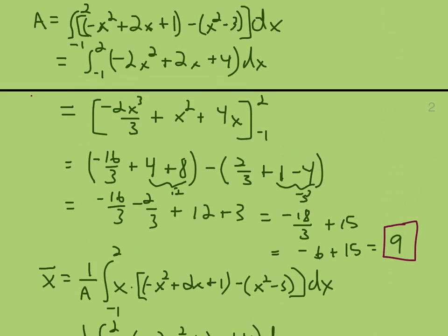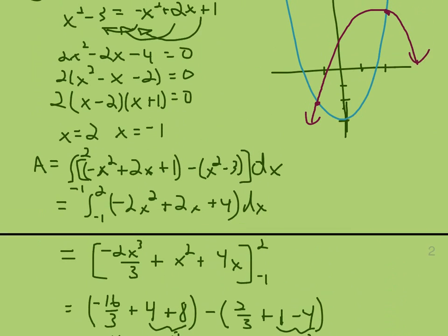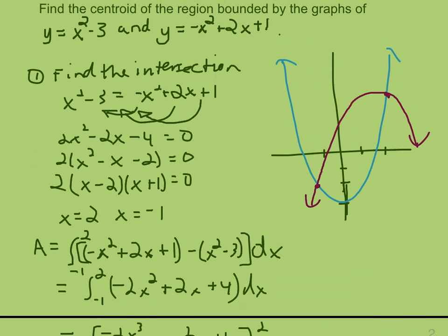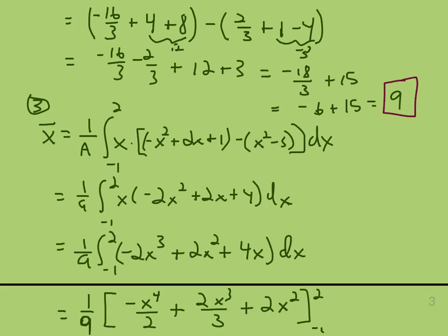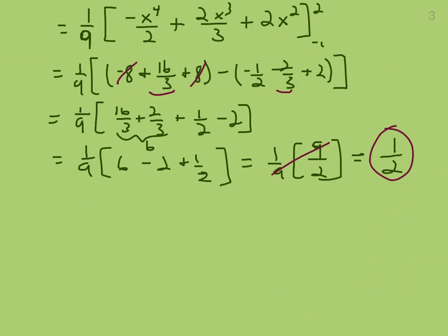So we have the area. We started off the process by finding the intersection. The second part was to find the area. And the third part was to find x bar. And then lastly, we have to find y bar, and we will do that in the next video.